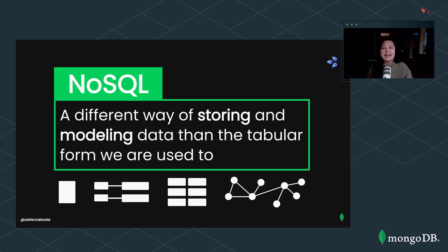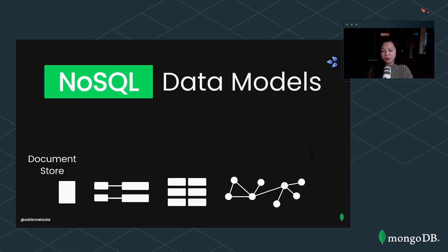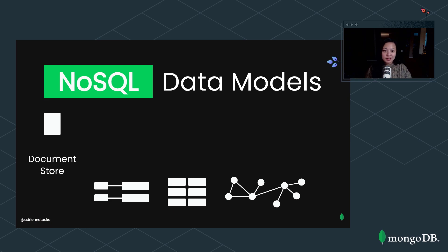If it's not the rows and columns we're used to, then you're probably wondering how do we model it — what is the NoSQL data model? There are actually four ways to do that. The first one is probably the one you're most familiar with, and that is the document store, where hierarchical data is stored within documents. Most of them are JSON-based, some are BSON-based.